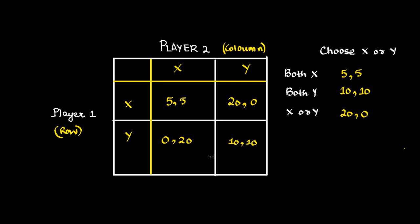Now let us look at from the angle of player 1. If player 2 chooses X, then the best strategy for player 1 is to choose X. If player 2 chooses Y, then the best strategy for player 1 is to choose X again. So no matter what player 2 does, the best strategy for player 1 is to choose X.